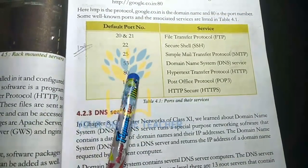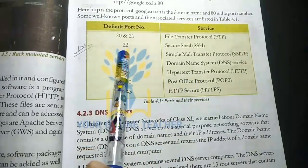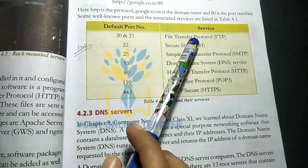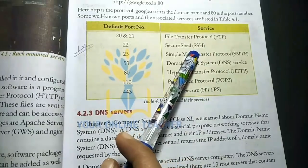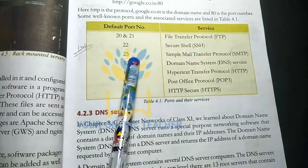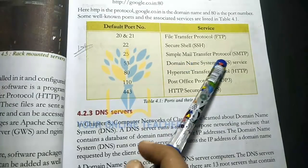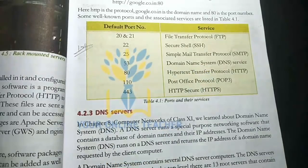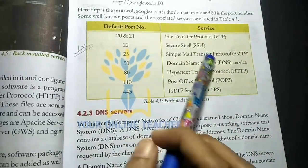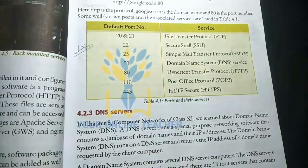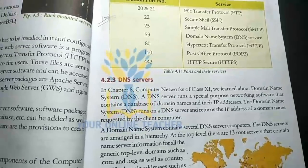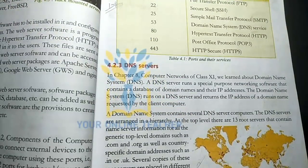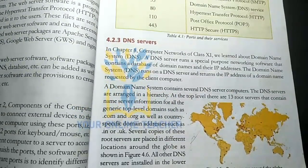Port 20 and 21 are for File Transfer Protocol (FTP). Port 22 is for SSH. Port 25 is for mail transfer protocol (SMTP). Port 53 is for Domain Name System (DNS). DNS stands for Domain Name System — this is the full form.